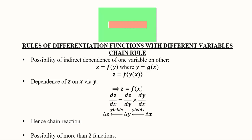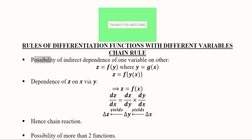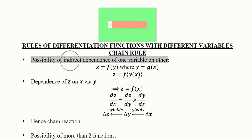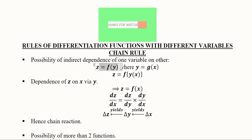In this video we will cover the chain rule, which is used when we have different variables in a function that further depends upon another function. This is basically the possibility of indirect dependence of one variable on another — a variable will depend on another variable not directly but indirectly, through another variable which will finally affect the last variable.